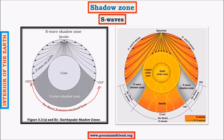This region is called the shadow zone for secondary waves. We have seen that secondary waves cannot travel through liquids. This shadow zone is established because of a liquid core present at the center. Based on the extent of this shadow zone and the deflection of the waves, one can estimate the size of this liquid medium at the core.